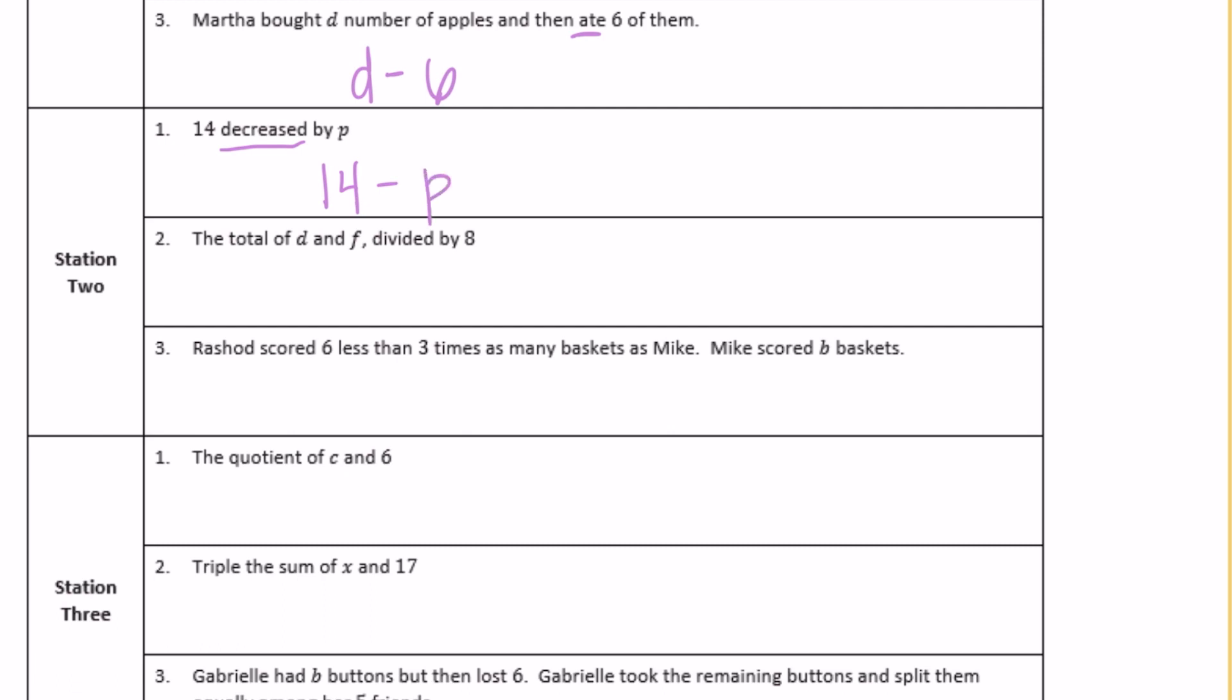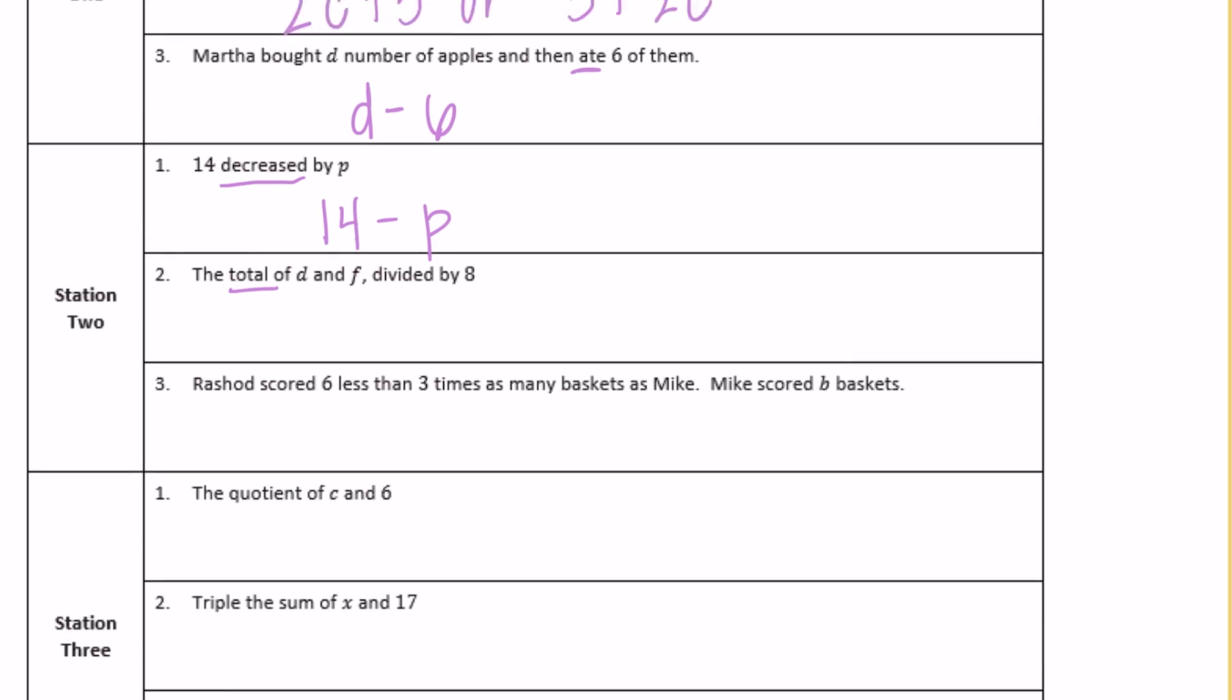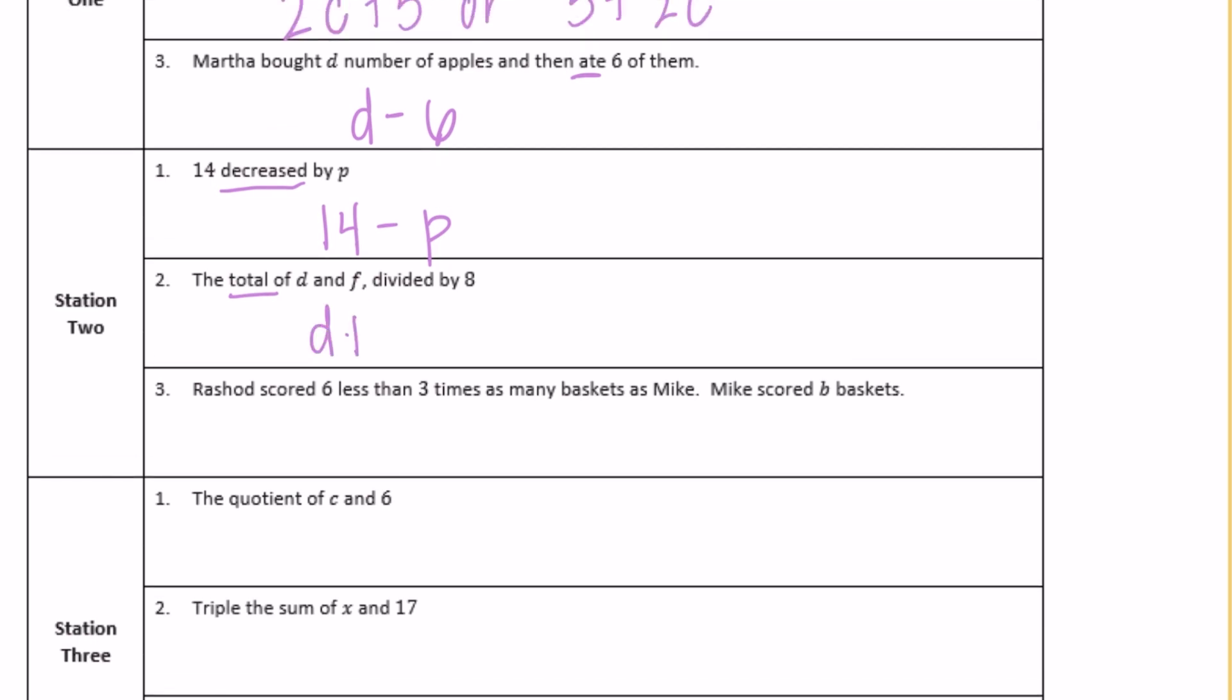Number two, the total of d and f divided by 8. The total means we're adding d and f. We want to keep d plus f together, and then divide it by 8. You could write it as (d + f) ÷ 8, or as a fraction: (d + f) over 8.